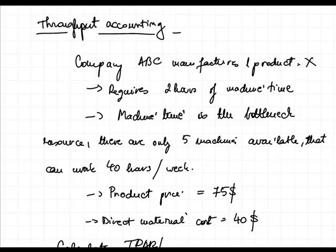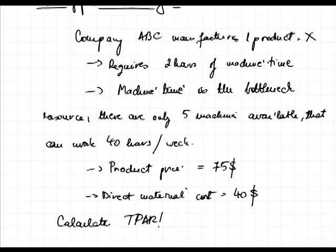In the example on screen, there is a company ABC that manufactures one product — Product X. Product X requires two hours of machine time, and besides all other resources available in virtually unlimited quantity, the machine time is a bottleneck resource because we have only five machines available that can work 40 hours a week, giving us 200 hours of machine work available during the week. The product price is $75 and direct material costs are $40. We are required to calculate the throughput accounting ratio.